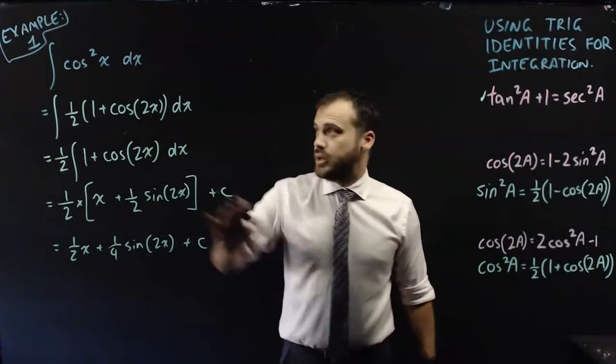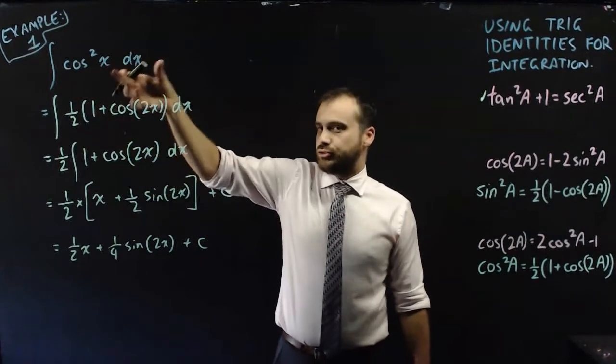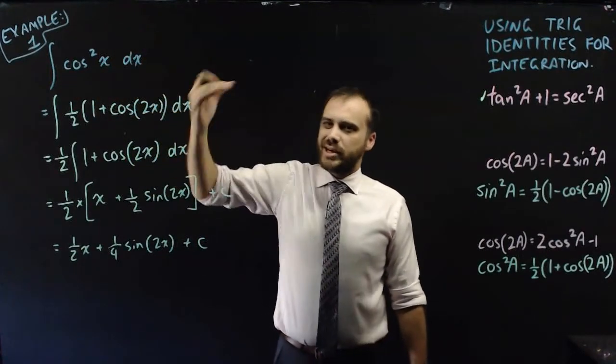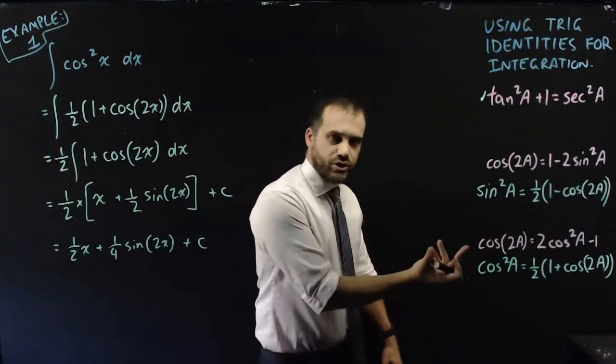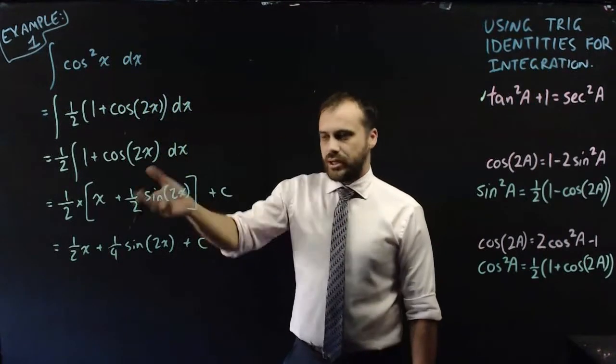So don't forget why we've done it. A trig was raised to a power. We can't integrate powers, so we use the trig identity to get rid of the power and then we can integrate.